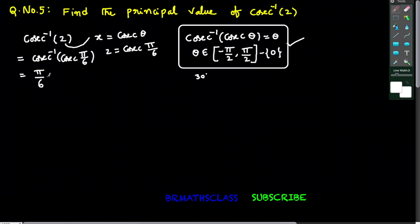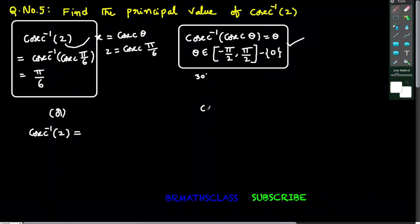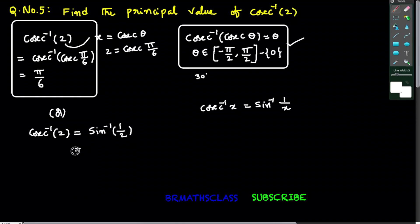The same problem we can do in another method also. From inverse trigonometric functions, we know this formula: cosecant inverse of x can be written as sin inverse of 1 by x. So cosecant inverse of 2 can be written as sin inverse of 1 by 2.